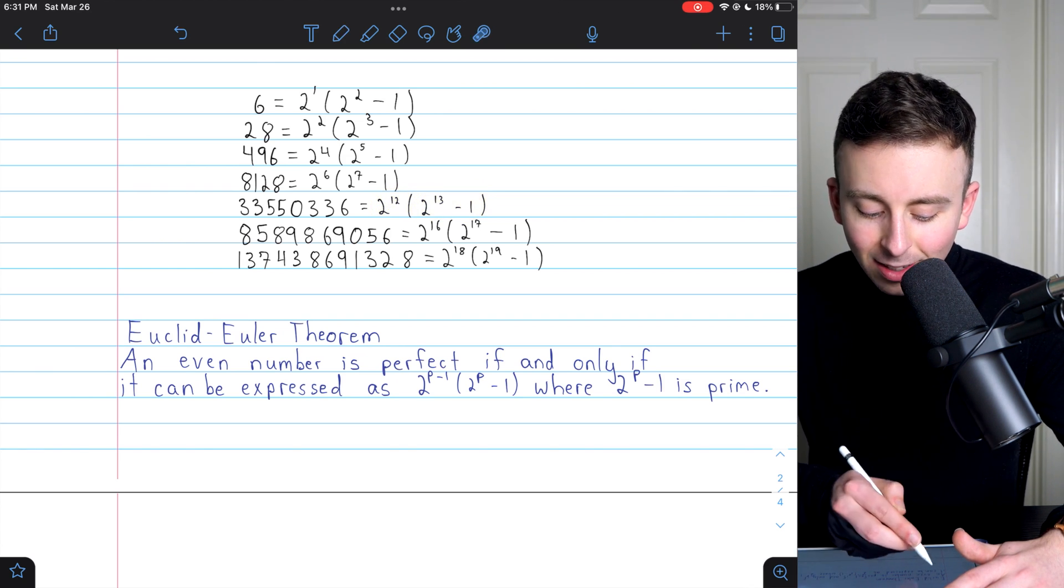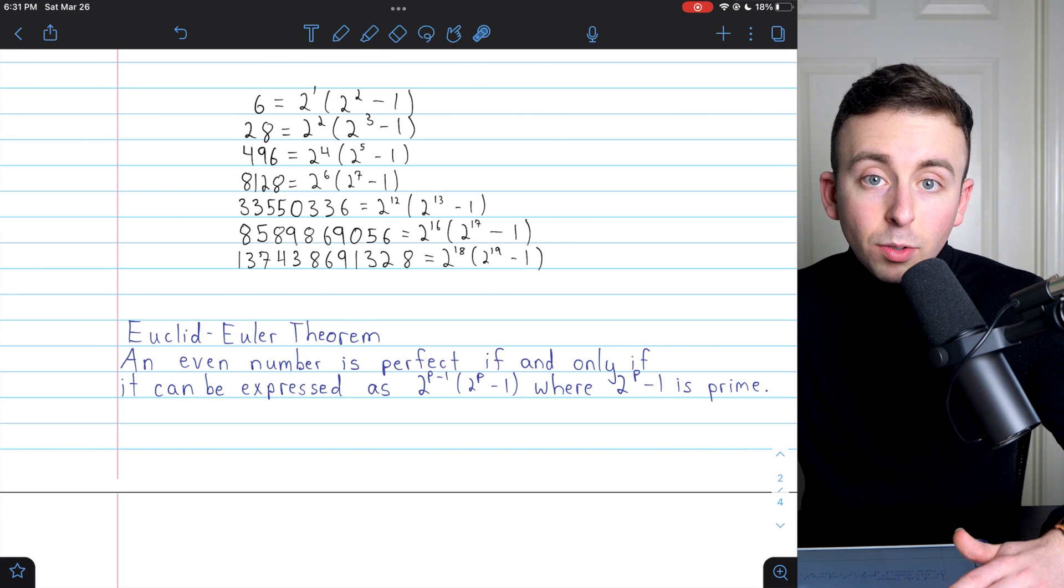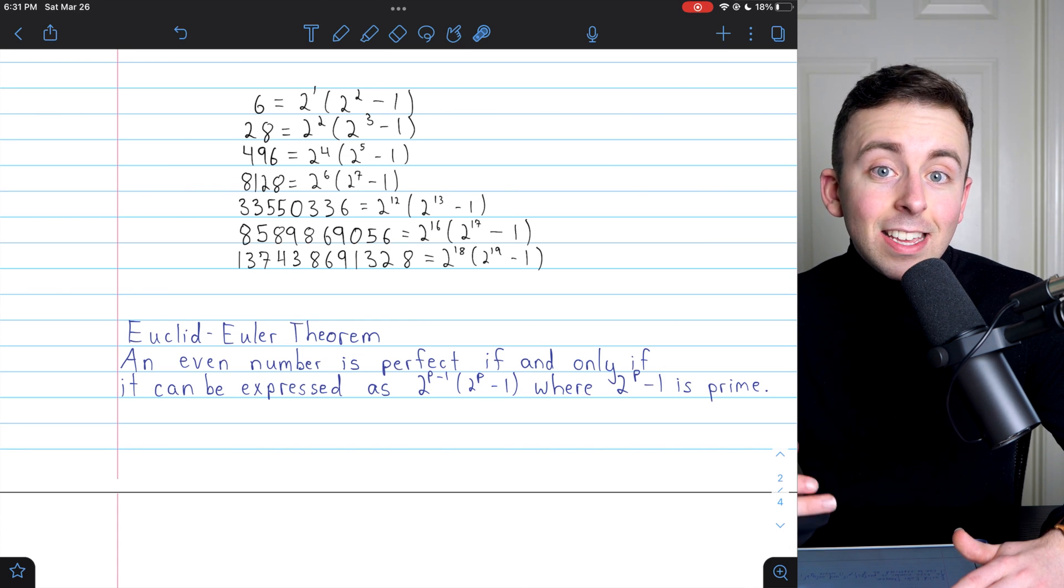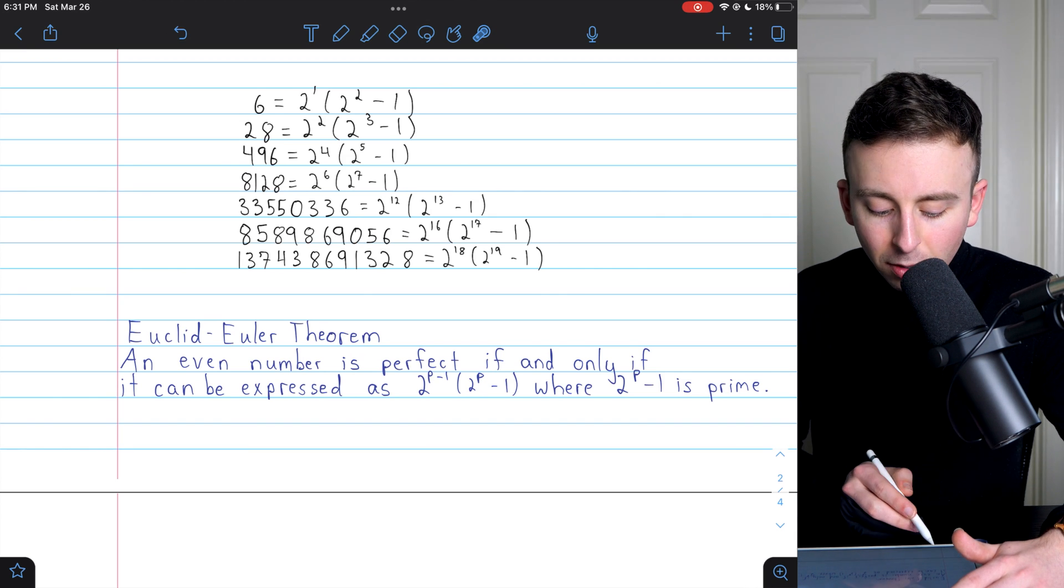Every even perfect number can be written like this. And this leads into what's called the Euclid-Euler theorem. One direction of this theorem was proven by Euclid in his famous textbook, The Elements, and the other direction wasn't proven until Leonard Euler's time.